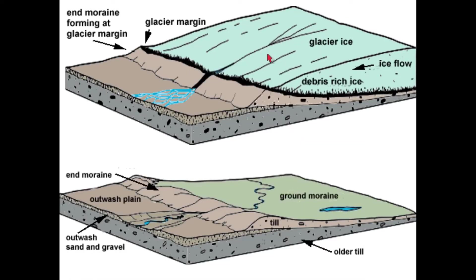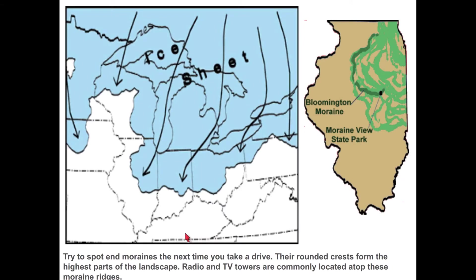Here's another view: glacier with streams flowing underneath making an esker when it retreats. Below the glacier is glacial till, and downstream is the outwash plain. Across the Midwest, those glaciers extended down into Illinois, Indiana, Ohio, and Pennsylvania — with recessional moraines all the way across in huge lobes as they advanced and retreated. The Great Lakes were also carved out by these sheets of ice.